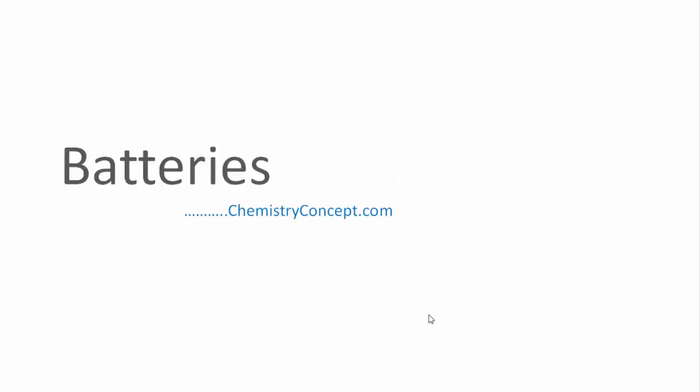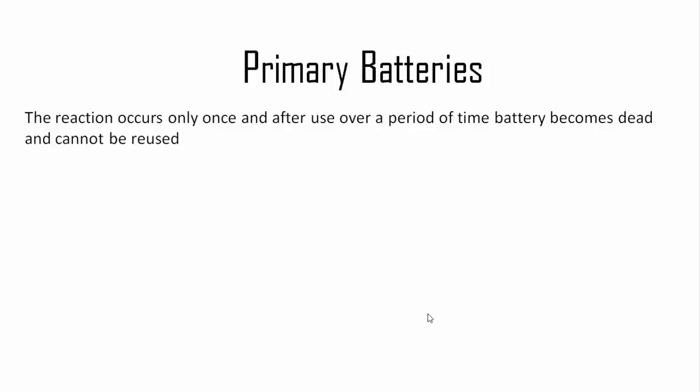In chemistry, we are going to discuss about batteries. Batteries are of two types: primary and secondary. Primary batteries are non-rechargeable. The reactions occur only once, and after a period of time the battery becomes dead and cannot be reused. We cannot charge them.